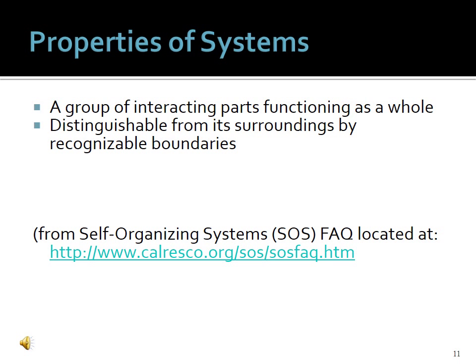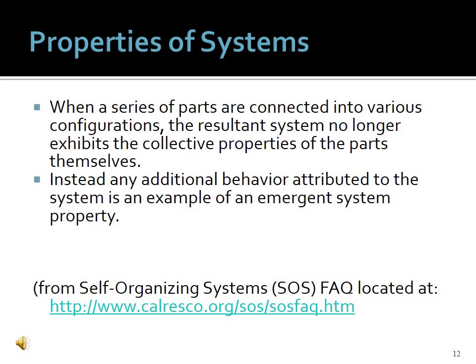What are some properties or characteristics of systems? A system is a group of interacting parts functioning as a whole, distinguishable from its surroundings by recognizable boundaries. When a series of parts are connected into various configurations, the resultant system no longer exhibits the collective properties of the parts themselves. Instead, any additional behavior attributed to the system is an example of an emergent system property.